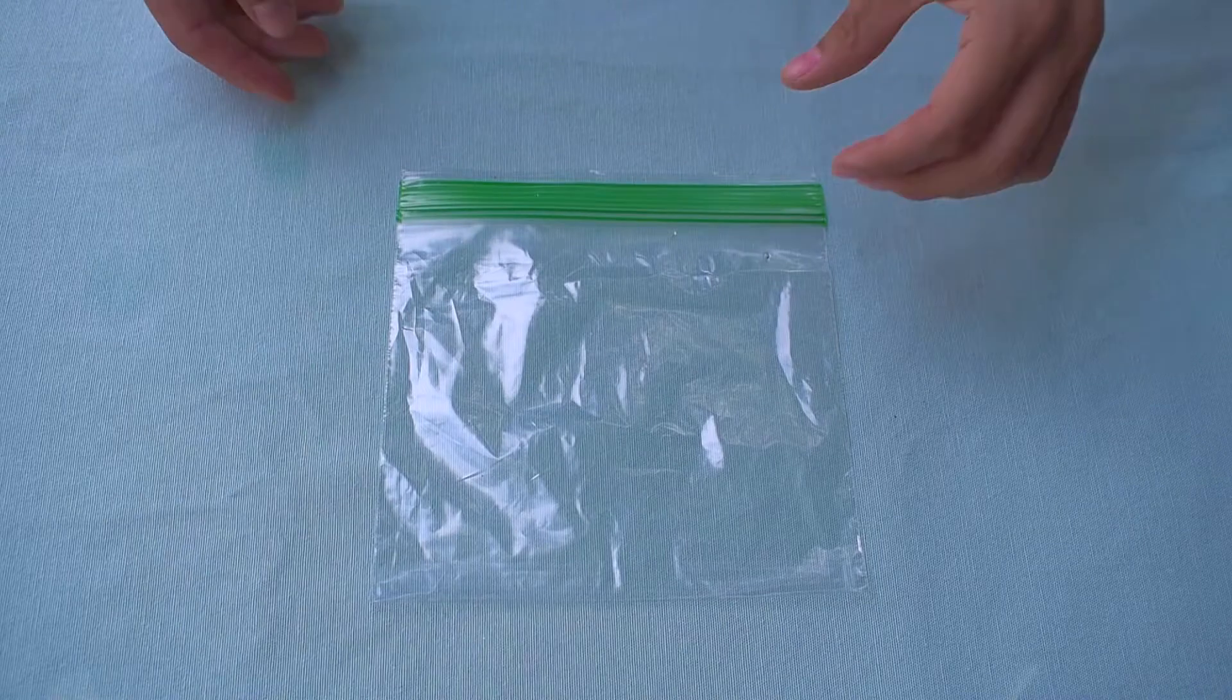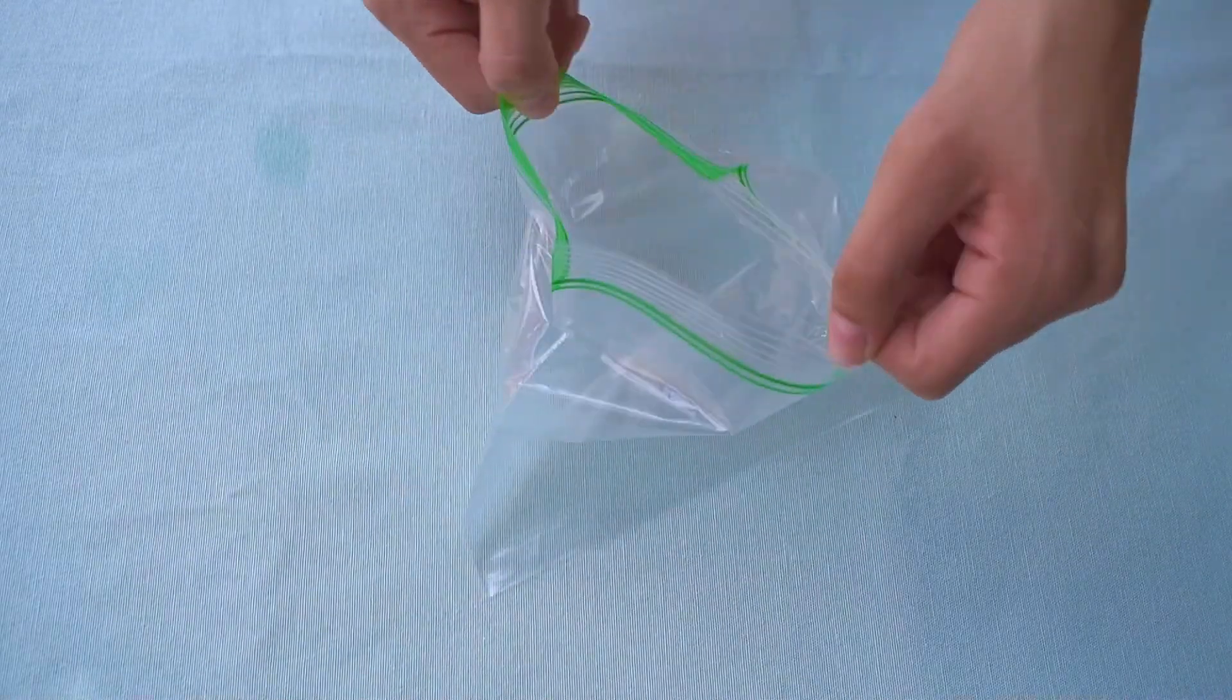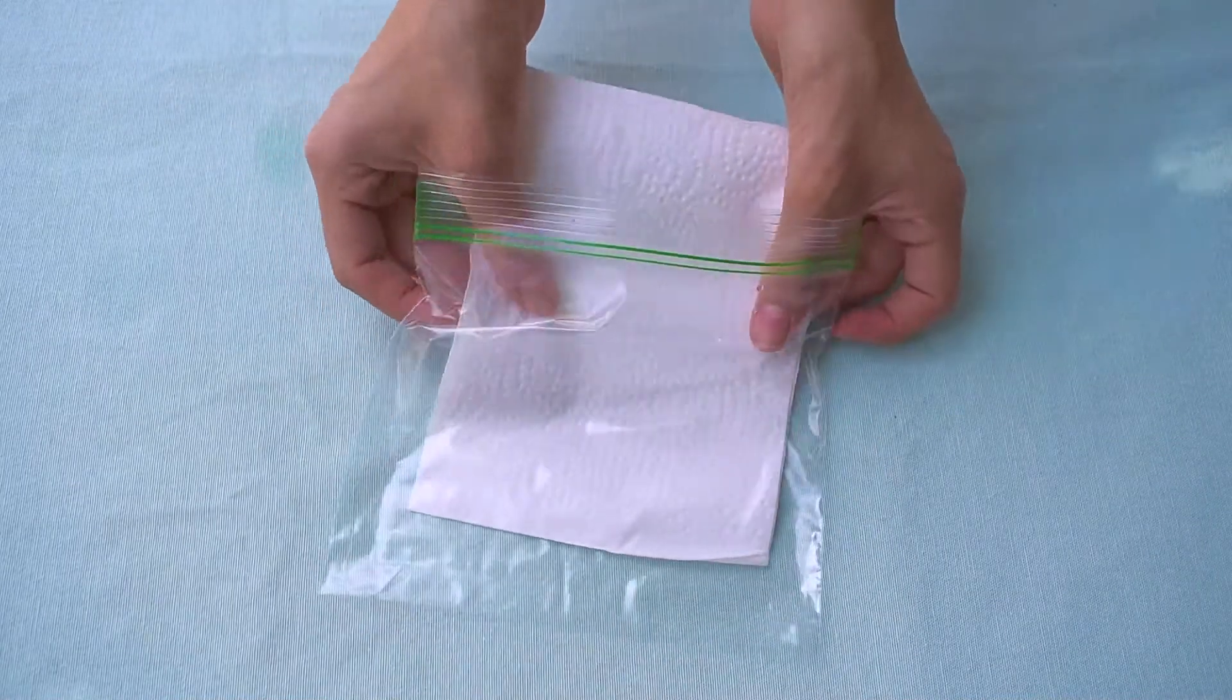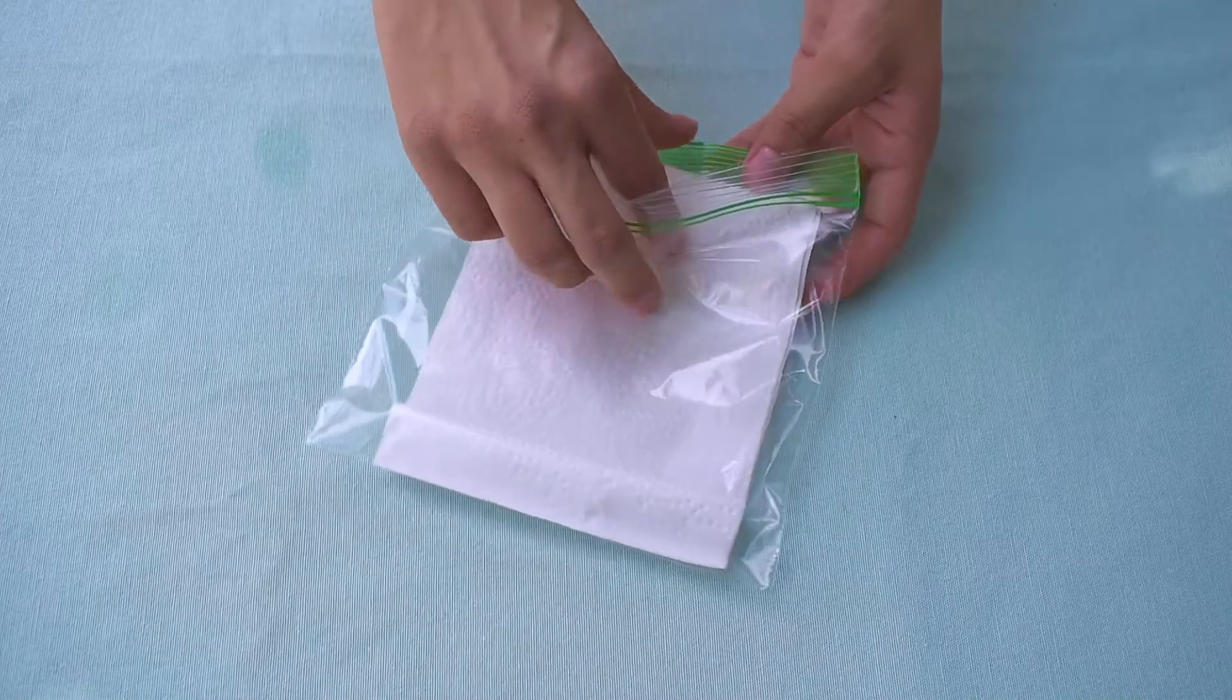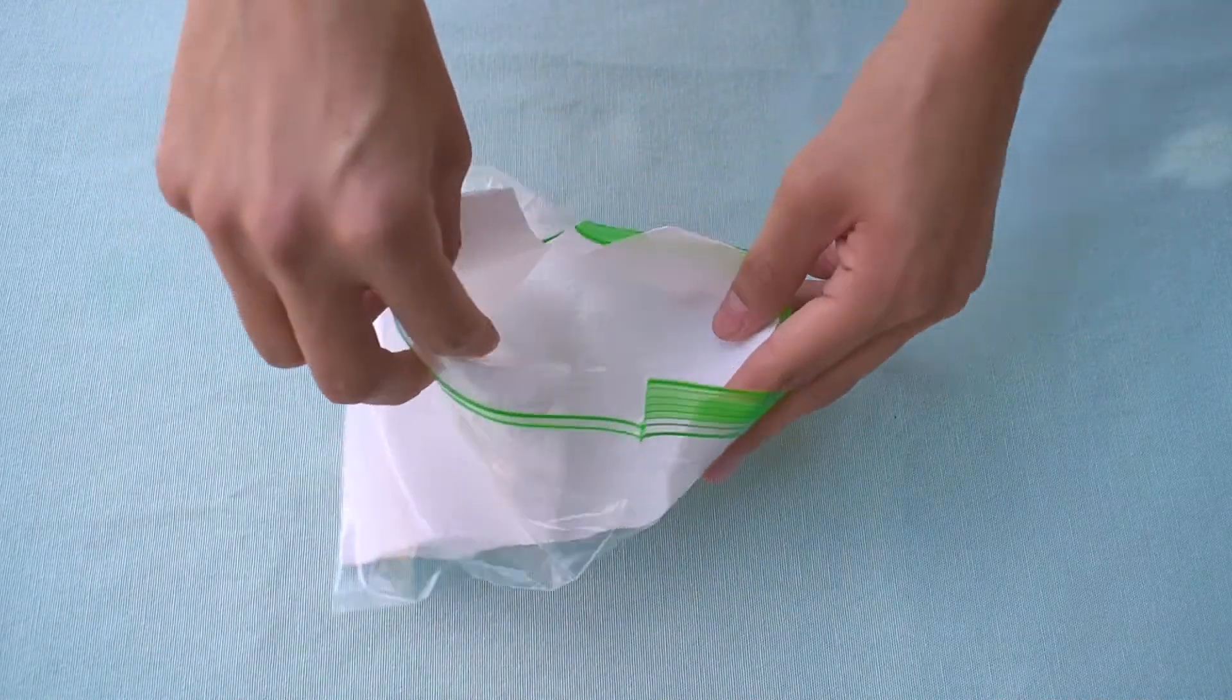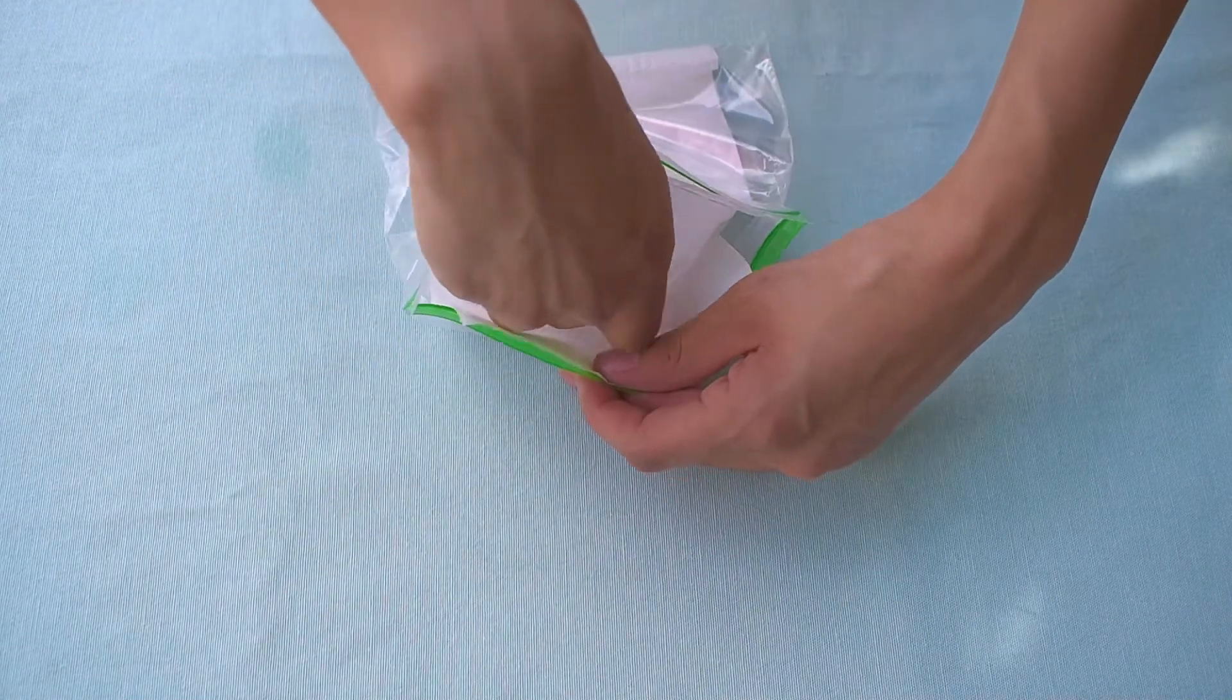Now let's get ready to grow our beans in a bag. So grab your bag, open it up, grab a napkin, put it in, and you're going to open up the napkin. Grab your beans. You can grab about four, five, six beans.